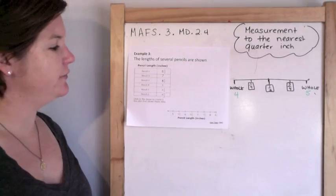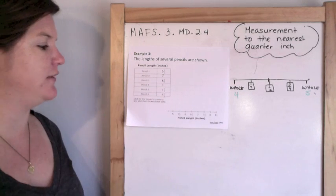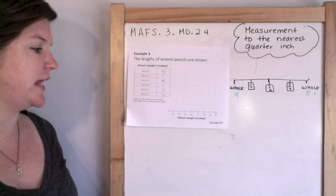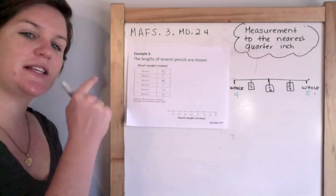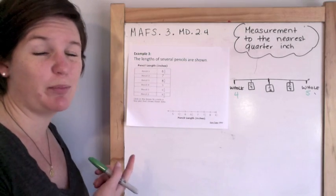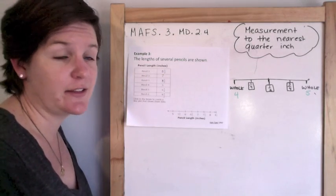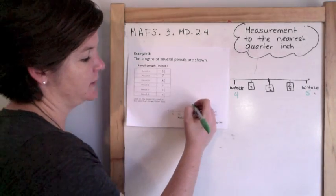Here's the pencil length. So pencil one is six and a half. Here's how much is there? We got seven, eight and a half, five, six and a half, and eight and a half. And this says click in the boxes to create a line plot that shows these data. So I know it says click and it says that in the item specs, but we won't be clicking because third grade, this is a paper based test.